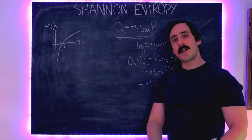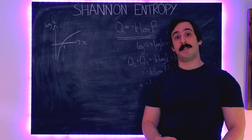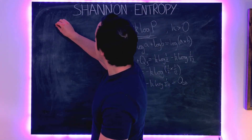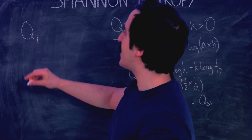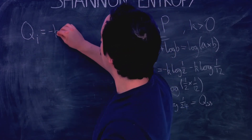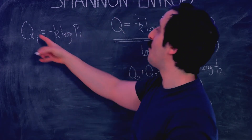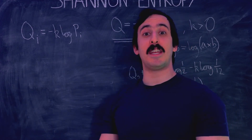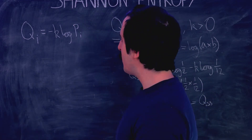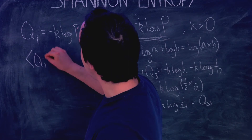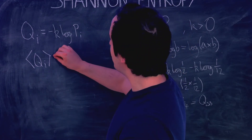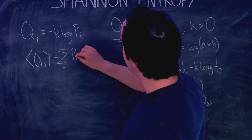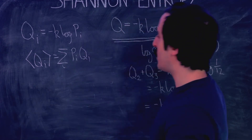Now let's look at the definition of entropy that follows. Assume we have a set of statements and the information content of the ith statement is Q_i = minus K log P_i. What we want is the average information content — the expected value of Q — when we're told something about our system. The expected value is the sum over all statements of P_i times Q_i.